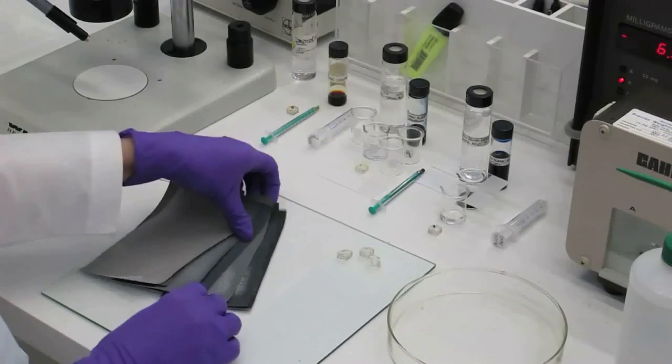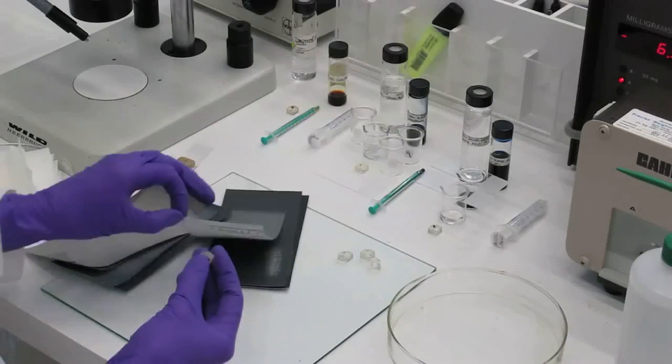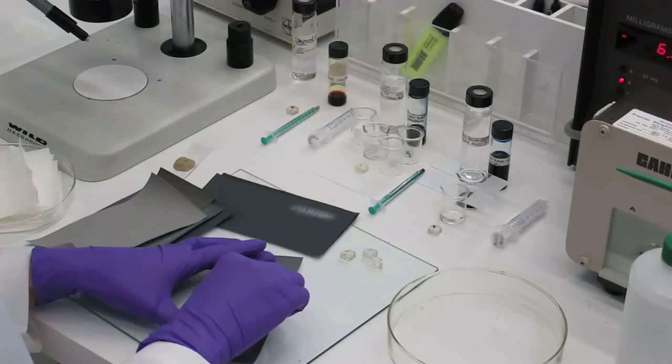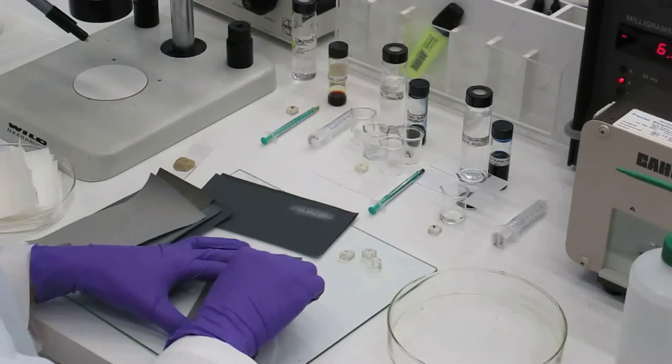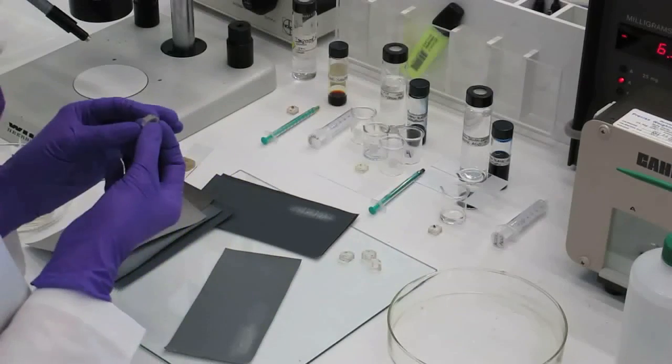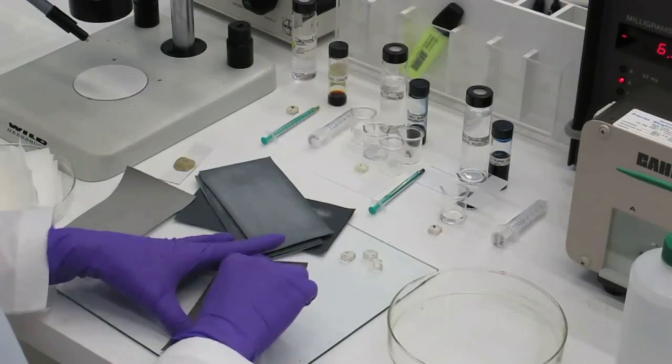To make sure that the sample has a perfectly smooth cross-section surface and is clean without any fingerprints or other contamination on it, it is useful to repolish the sample just before starting the staining procedure. For this purpose, the finest grades of micro-mesh with grids of around 6,000 to 12,000 are used.